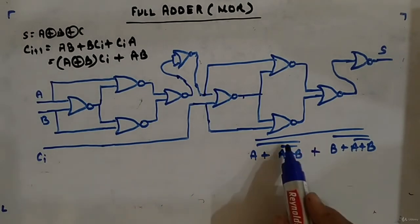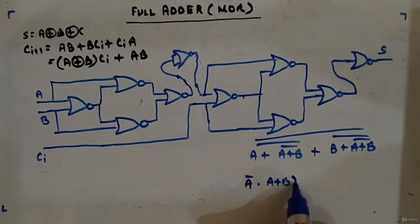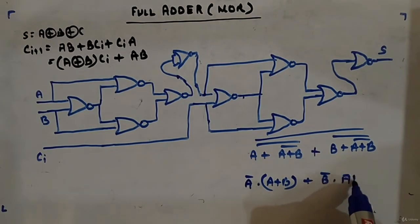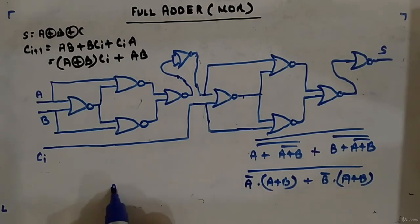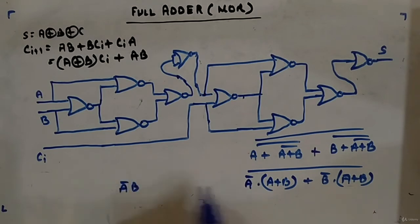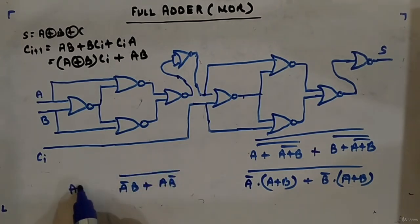Applying De Morgan's law here: A bar dot (A plus B) plus B bar dot (A plus B), all barred. Opening the brackets, A·A bar gives zero, leaving A bar·B plus A·B bar, all barred — which is A XOR B.